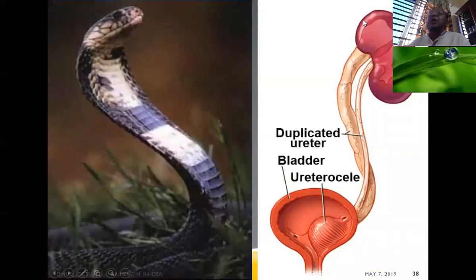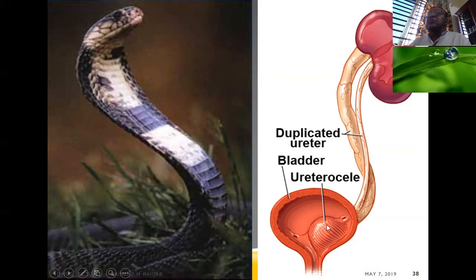On IVP, there is a classic sign associated with ureterocele known as the cobra head sign — the dilated ureter terminal end resembles the head of a cobra.